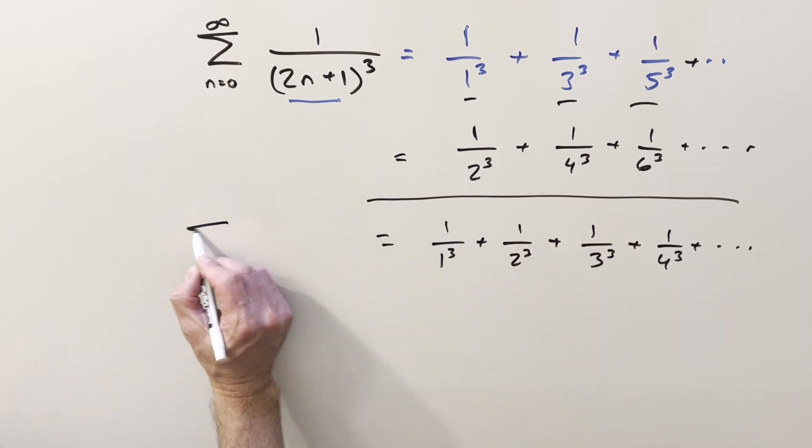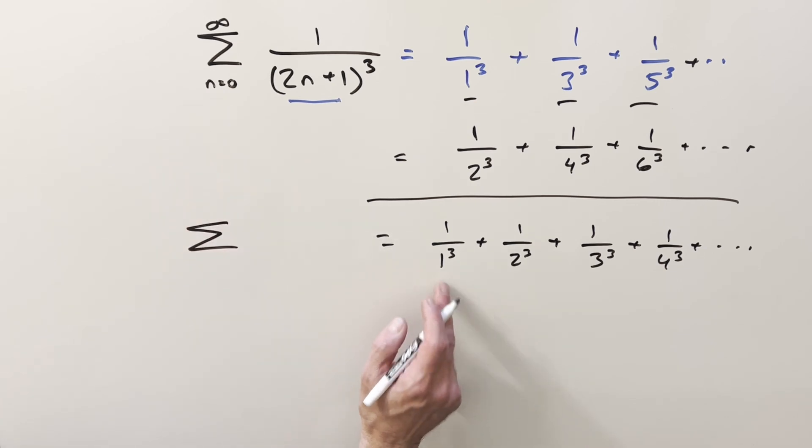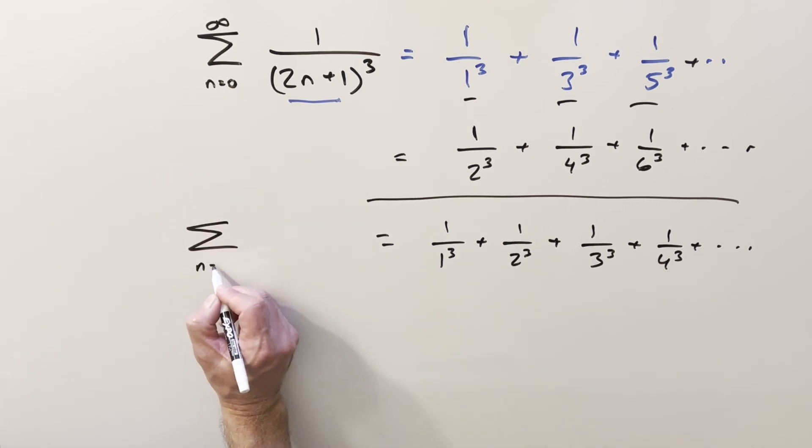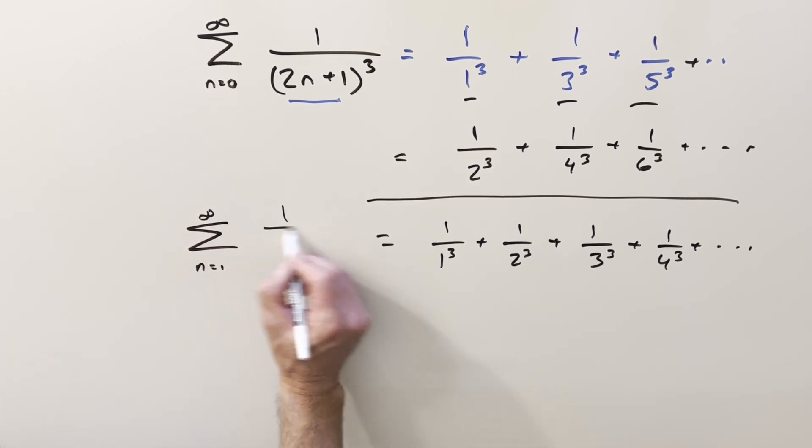Putting this into notation, we don't want to start at n=0 because the first term here is 1. So this is the sum from n=1 to infinity of 1/n³.